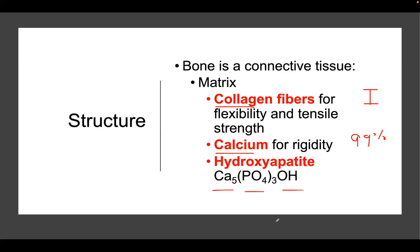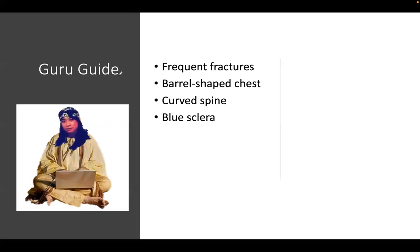Here's a clinical scenario: frequent fractures, a barrel-shaped chest, a curved spine, and blue sclerae. What disease pops into your head? This is osteogenesis imperfecta, commonly known as OI. The giveaway — the most unique clue — is the blue sclerae.